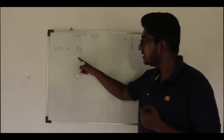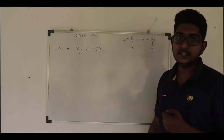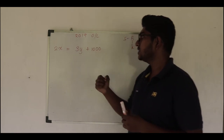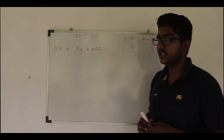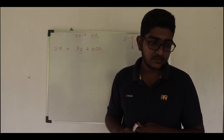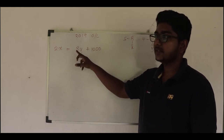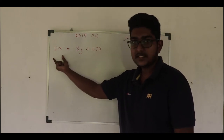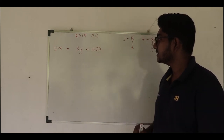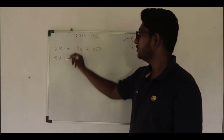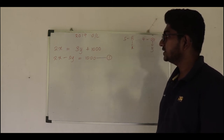The price of two boys' costumes is one thousand rupees more than three girls' costumes. In order to equate 2x with 3y, I have to add one thousand to the right-hand side. So the first equation becomes 2x minus 3y equals 1000, taking all unknown terms to the left-hand side and keeping numbers on the right.